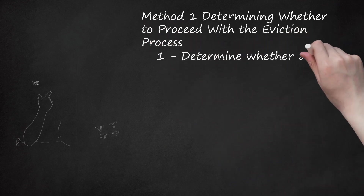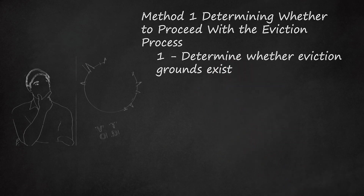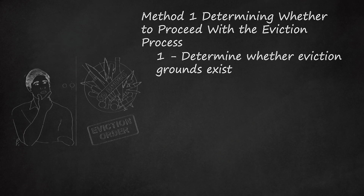Determine whether eviction grounds exist. You can evict a tenant if the proper grounds for eviction exist. The most common ground for eviction is typically the non-payment of rent due. Other grounds for eviction relate to any violation of the lease agreement, as well as violations of local, state, or federal laws by the tenant while on the premises of the leased property. Some of the most common lease agreement violations include the following.